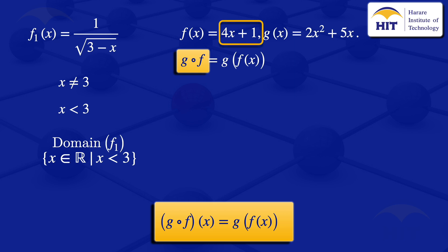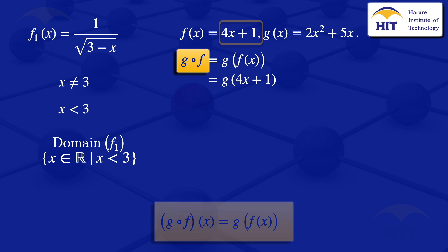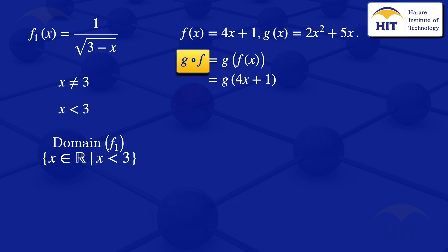Since f(x) = 4x + 1, wherever we have x in g(x) we replace it with 4x + 1. So g(f(x)) means substituting 4x + 1 in place of every x in the expression for g.